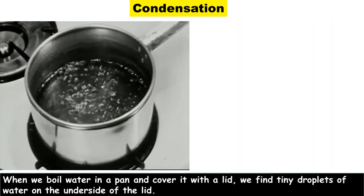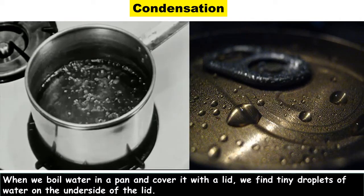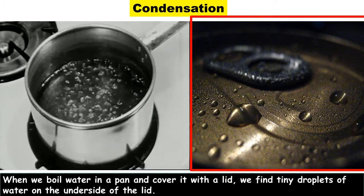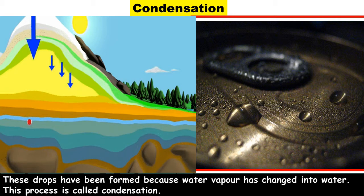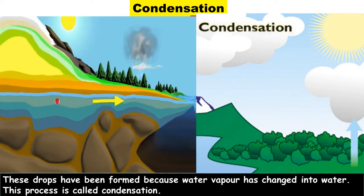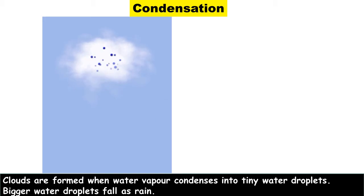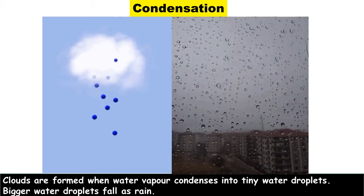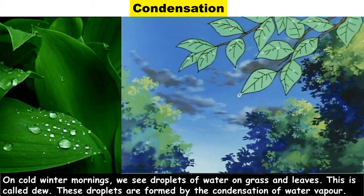Condensation: When we boil water in a pan and cover it with a lid, we find tiny droplets of water on the underside of the lid. These drops are formed because water vapor has changed into water — this process is called condensation. Clouds are formed when water vapor condenses into tiny water droplets, and bigger water droplets fall as rain. On cold winter mornings, we see droplets of water on grass and leaves — this is called dew, and these droplets are formed by the condensation of water vapor.